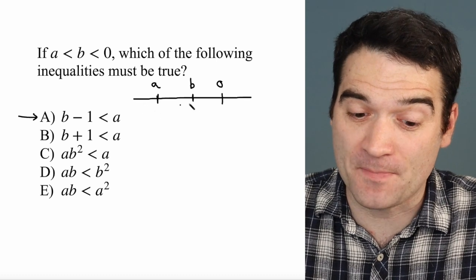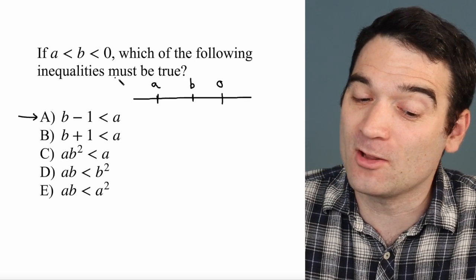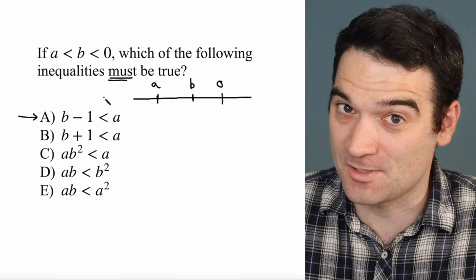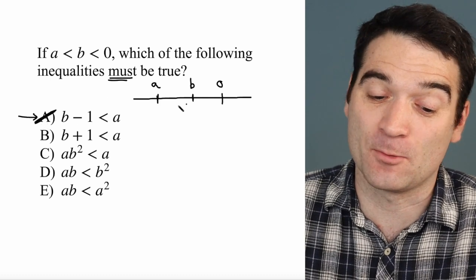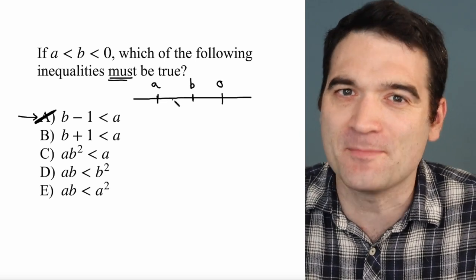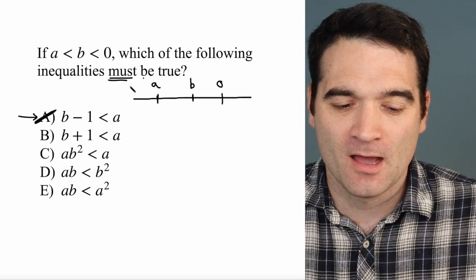Well, it could be, depending on how far apart A and B are. And that's the problem. We're not looking for something that could be true. We're looking for something that must be true in every situation. So A does not necessarily work. I don't know if A and B are 0.00001 centimeters apart or 1 million centimeters apart. I just don't know.